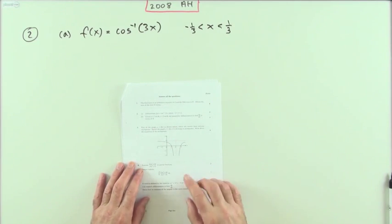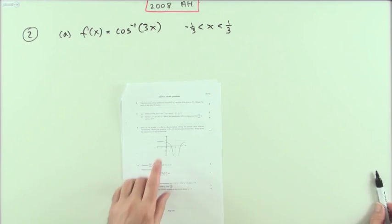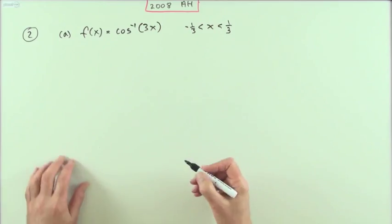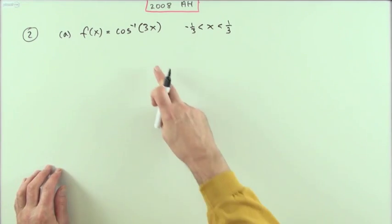Number two from the 2008 advanced higher, five marks. Two little differentiations, very simple. First one, just differentiate this trig expression here. Well, there's a little technicality, a little bit of legalese, because obviously cosine can only go from one to negative one.